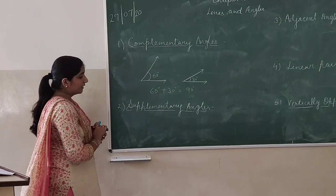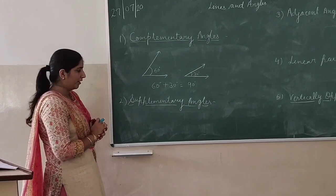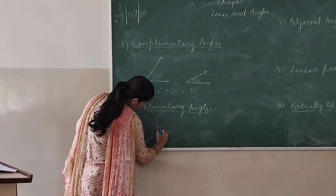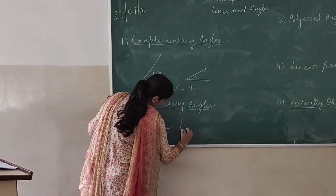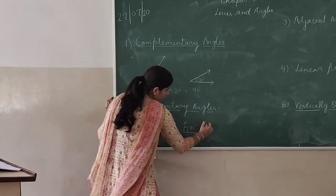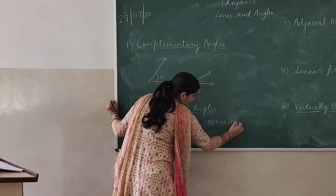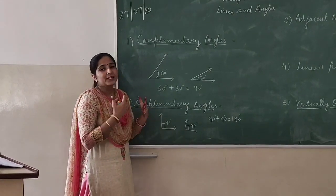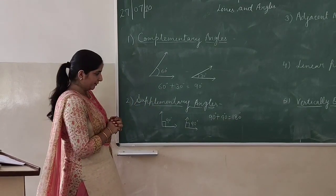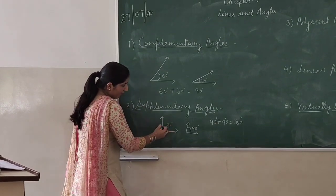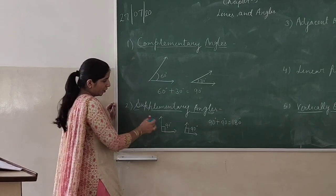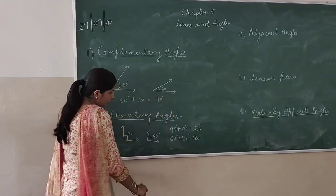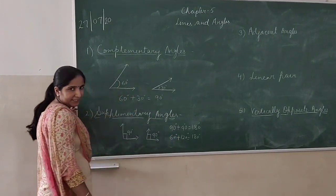Next is supplementary angles. If the sum of two angles is 180 degrees — say I take one angle of 90 degrees and another of 90 degrees, their sum is 180 degrees — then those angles are known as supplementary angles. Similar to complementary angles, one angle is the supplement of the other. For example, 60 degrees and 120 degrees: their sum is also 180 degrees, so 120 degrees is the supplement of 60 degrees and vice versa.